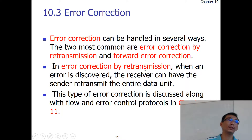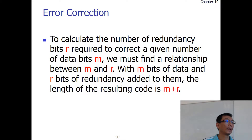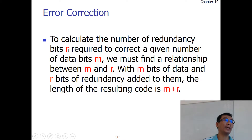Retransmission — you just ask the sender to retransmit. For error correction, you require R bits to correct a data of M bits.